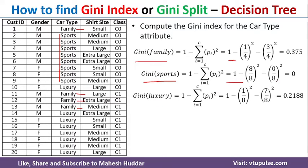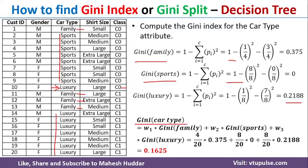For luxury, there are 8 examples — 1 is C0 and 7 are C1. So Gini(luxury) = 1 − (1/8)² − (7/8)² = 0.2188. The final Gini for car type is: W1 × Gini(family) + W2 × Gini(sports) + W3 × Gini(luxury), where W1 = 4/20, W2 = 8/20, and W3 = 8/20. Solving this gives Gini(car type) = 0.1625.